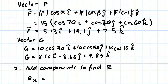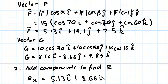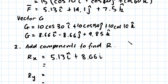This is a continuation of the previous video. We're up to the part where we can add components together to find the resultant. We're going to start by adding the components in the x direction. We have to add the x component of F and the x component of G, so we write this as 5.13i plus 8.66i, and if we add that up we get 13.79i — that is our final resultant component in the x direction.